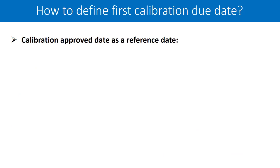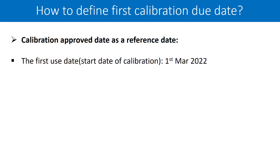Which one should be your next calibration due date? Let us talk about the calibration approval date as a reference date. You have approved your calibration data — I think this could be a good starting point: everything is perfectly executed, the data is reviewed by quality assurance, and we set this as time zero — our reference date — to calculate the next calibration due date, perhaps at 6 months. Let us first review the complete dates again. The first use date is your calibration start date.